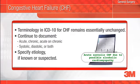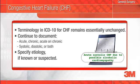ICD-10 terminology describing congestive heart failure remains essentially unchanged from ICD-9. However, there is currently an opportunity for improvement in documenting this diagnosis. To provide an accurate picture of the patient's severity of illness and risk of mortality, you should specify whether the patient's congestive heart failure is acute, chronic, or acute on chronic, and whether it is systolic, diastolic, or a combination of both. Additionally, you should document the cause or etiology when known or suspected. An example of excellent documentation would be: acute systolic heart failure due to possible or suspected alcoholic cardiomyopathy.